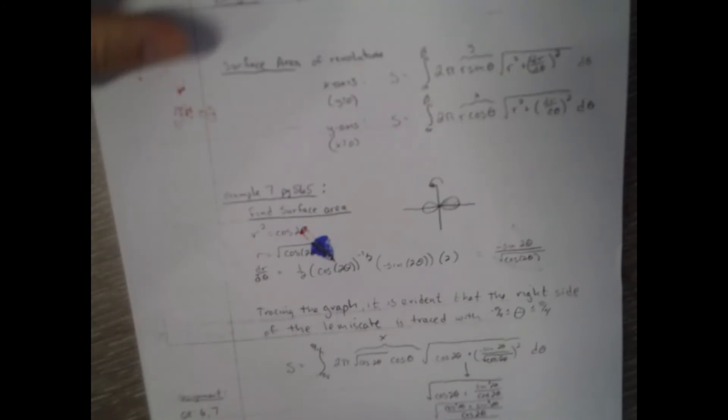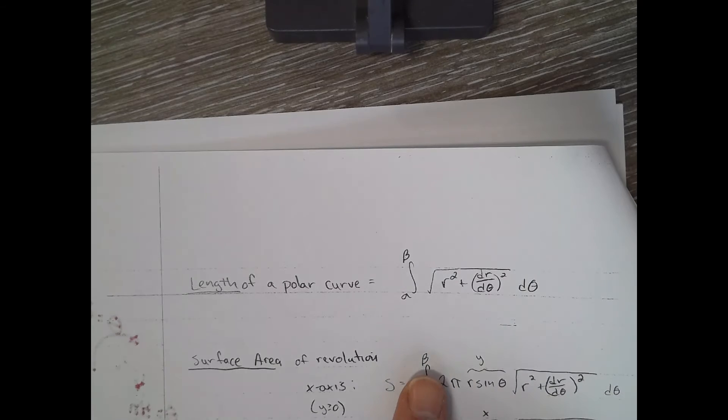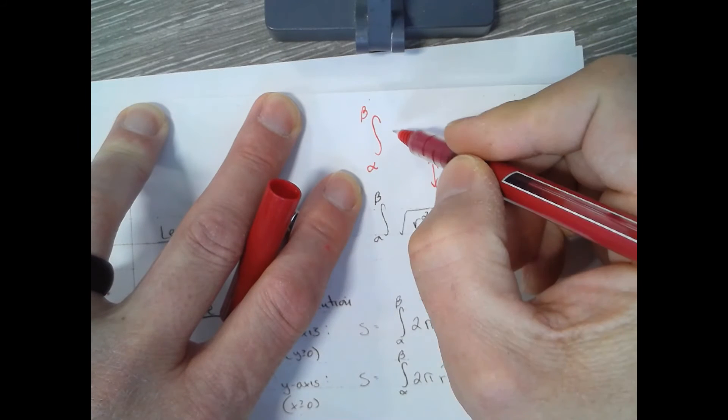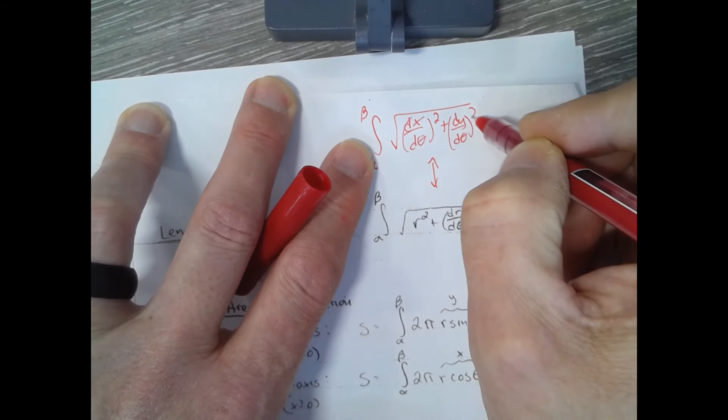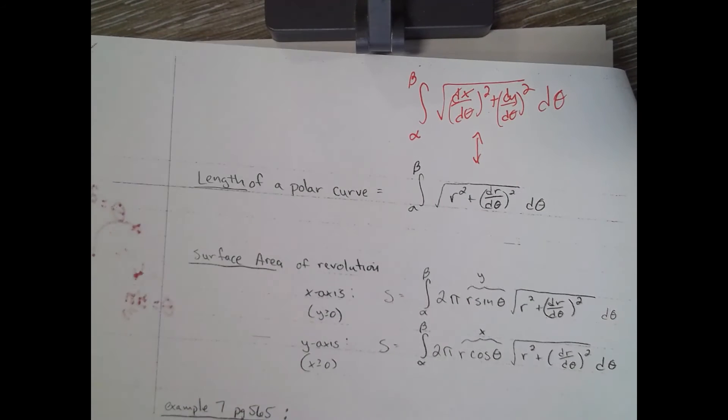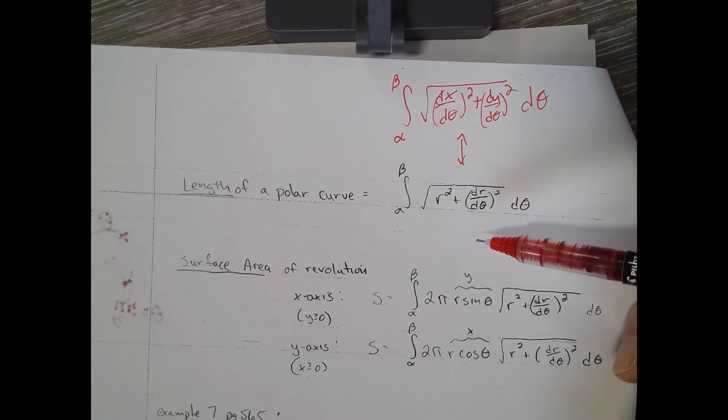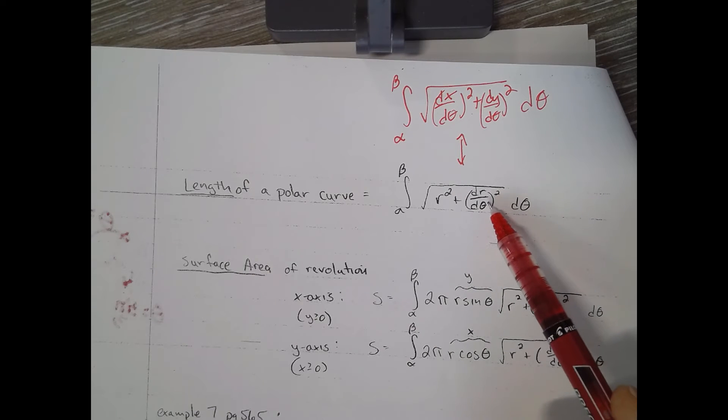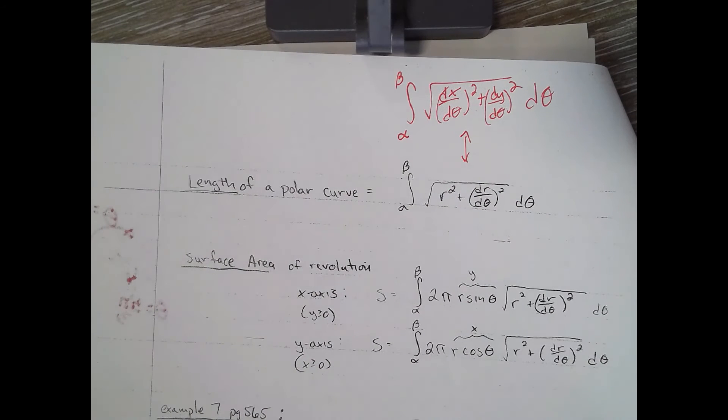Length of a polar curve. So it's another formula. This right here is actually the same as integral from alpha to beta square root of dx d theta squared plus dy d theta squared d theta. And if we had time or interest, we could prove that these two integrals are the same. This is a more workable integral. It's easier than doing that. Because you're going to be given r as a function of theta, so you can just find the derivative, plug it in here, and then just square r and you're good. I would just base the length of the polar curve off of that formula right there.